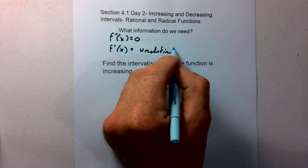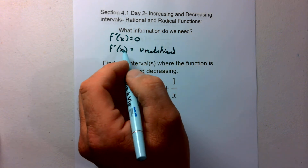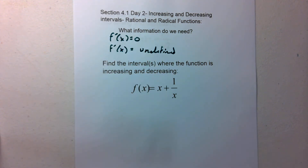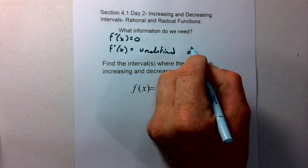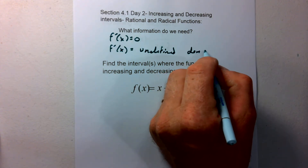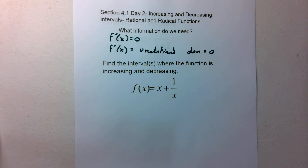When we talk about a rational function, our derivative is going to be undefined when our denominator equals zero. So those are the two things that we're going to need today: we're going to find when the first derivative is equal to zero, and also when it's undefined.